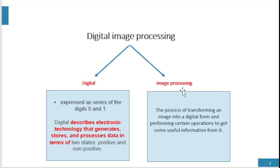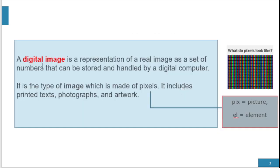The second term is image processing. Image processing is used to transform the image into digital form and get useful information from it. A digital image is a set of information or data that can be stored or handled by a digital computer. It is a type of image made of pixels, and includes printed text, photographs, and artwork.